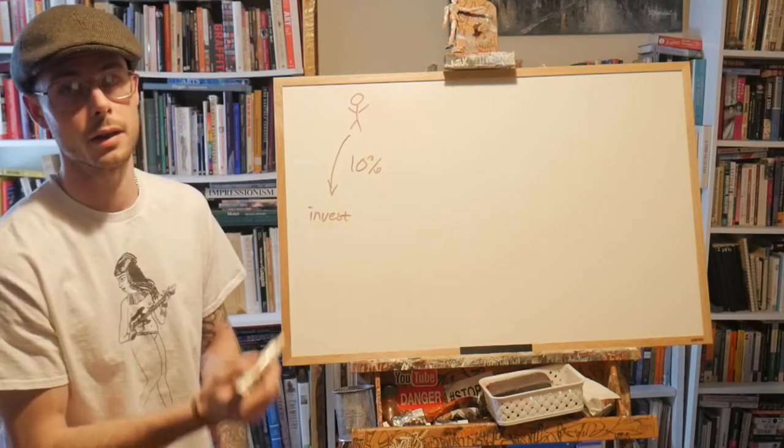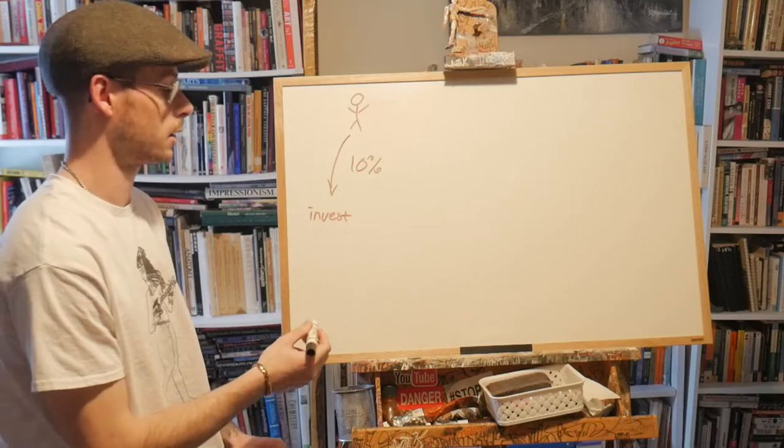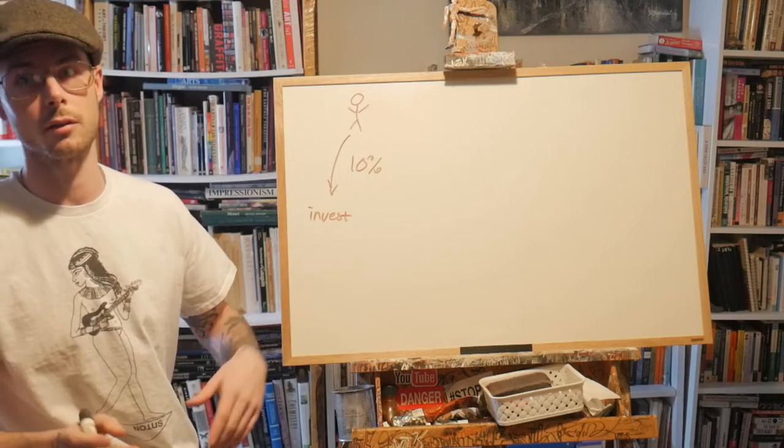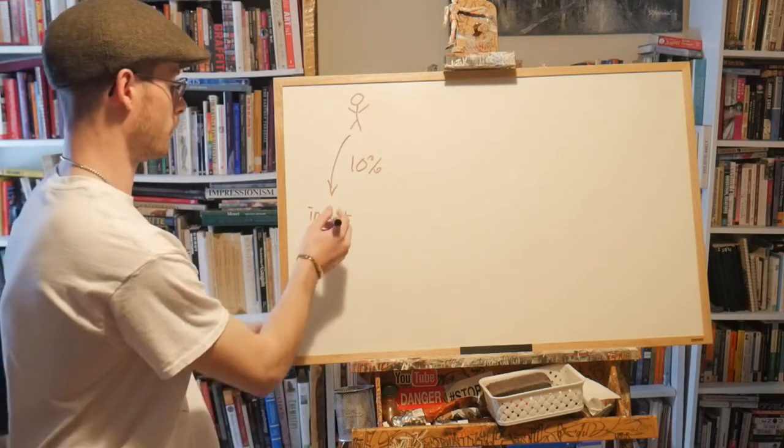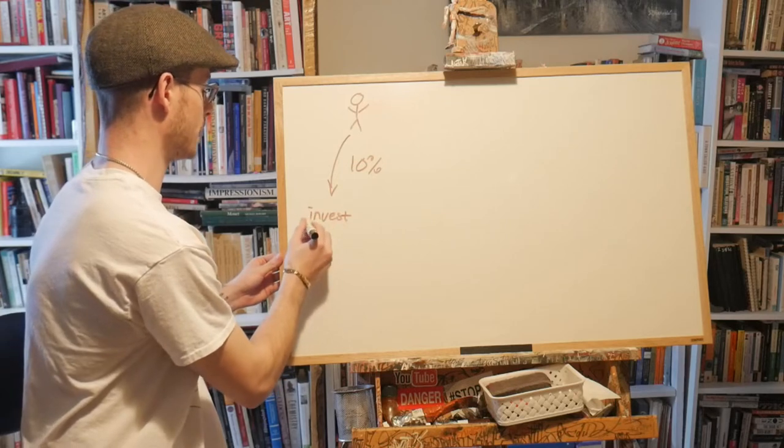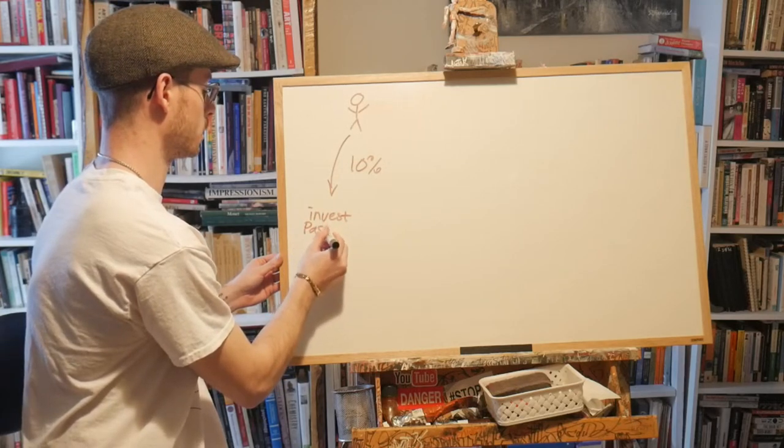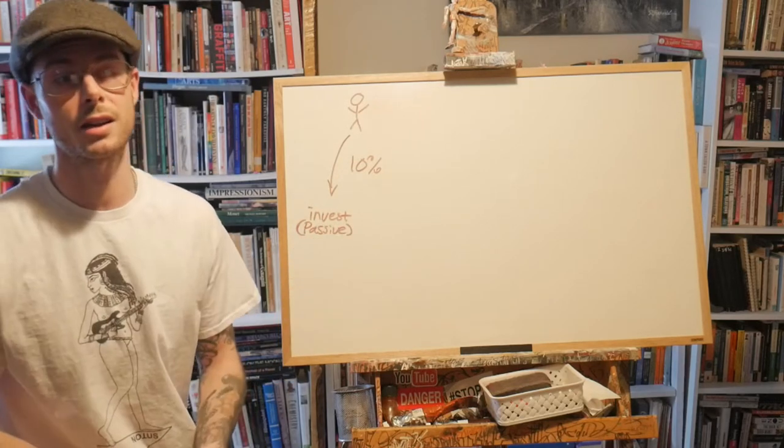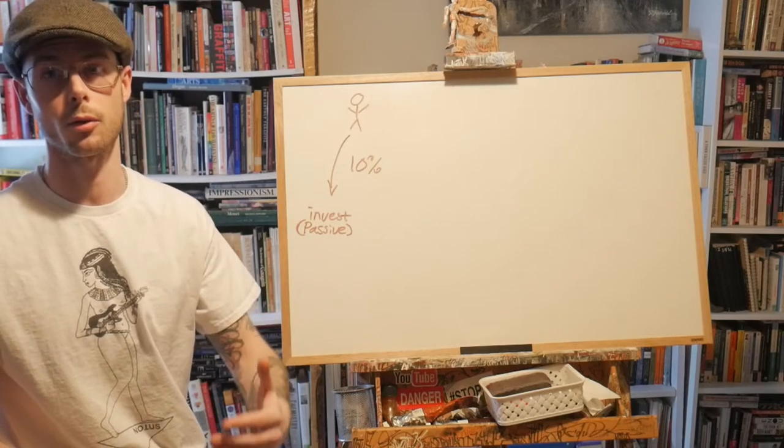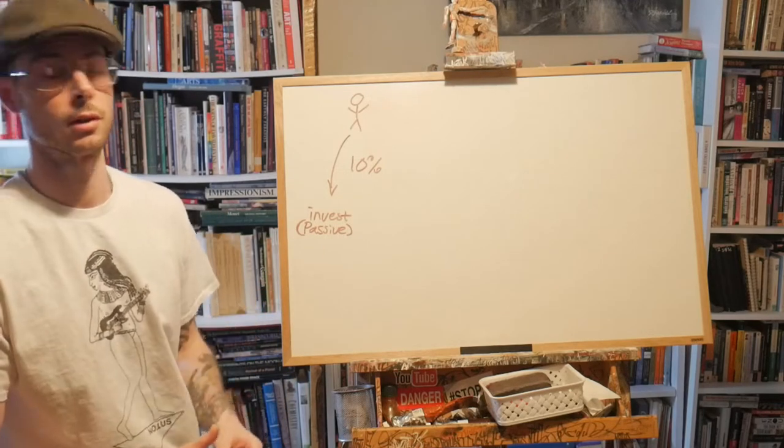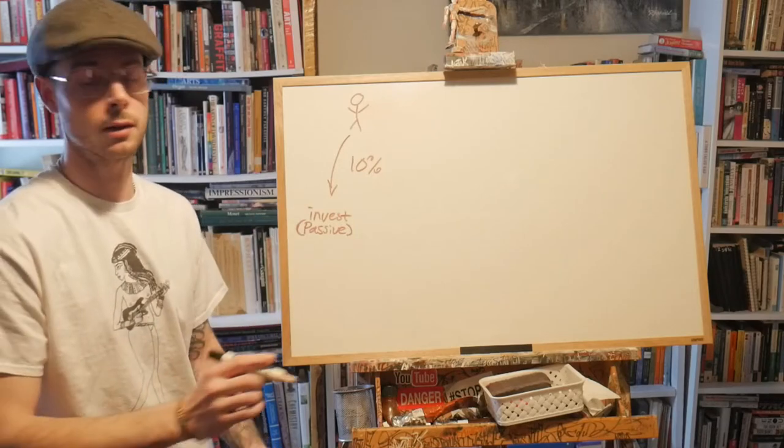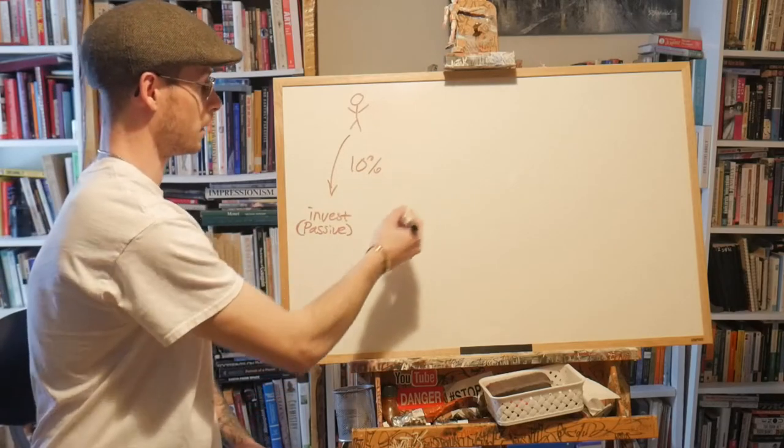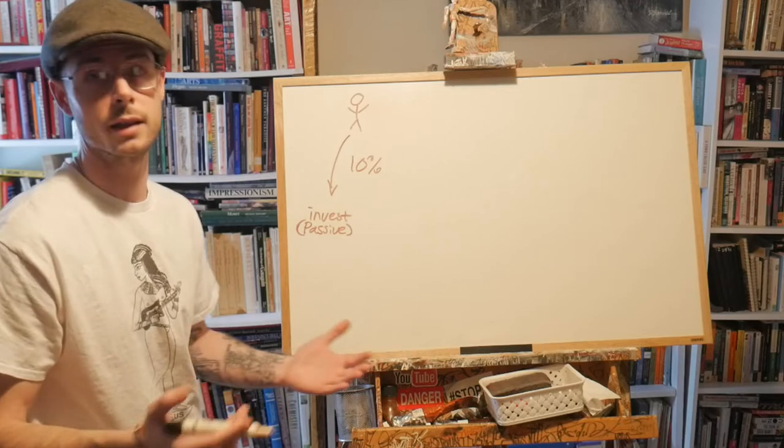At least, divert at least 10% of your income towards what? Towards investment. But the keyword here for this type of investment - and we'll go into different types of incomes and investments in another video - but for this type of investment, it's a passive investment. This type of investment doesn't require extra work from you, it only requires the investment itself. That's what makes it a passive investment.